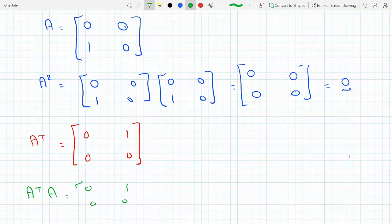So I will get, row times column: the result is [[1,0],[0,0]].